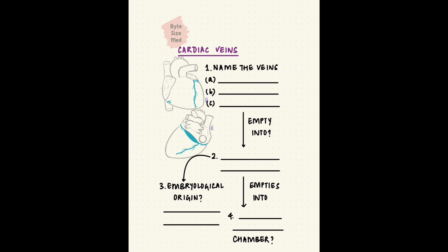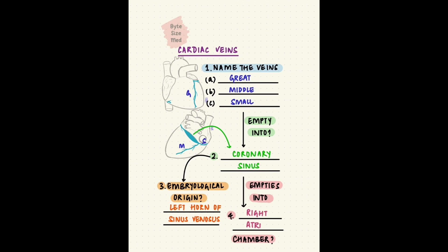There are three main veins draining the heart: the great, middle, and small cardiac veins. They empty into the coronary sinus, which is located in the coronary sulcus. The coronary sinus is derived from the left horn of the sinus venosus and it empties into the right atrium.